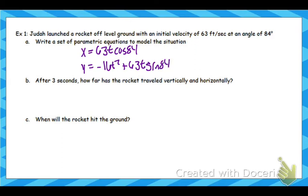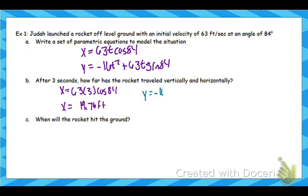So the first one, if we want to find it algebraically, after 3 seconds, how far has it traveled? Well after 3 seconds, all we have to do is plug in 3 for t. If I plug it into the x equals equation, that's going to tell me the horizontal distance, which would be 19.76 feet. If I want to find it vertically, then I plug it into the y equals equation, and my height there would be 43.96 feet. And that would be how high it is after 3 seconds.